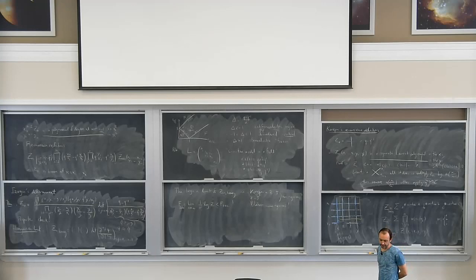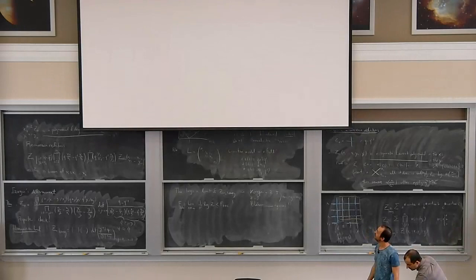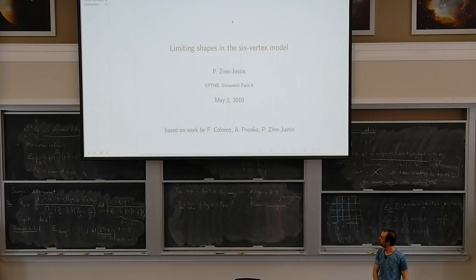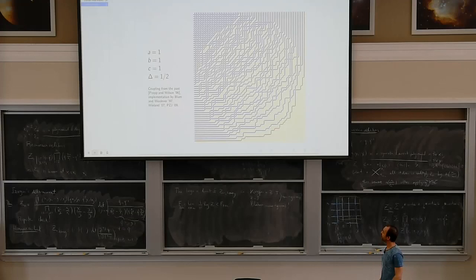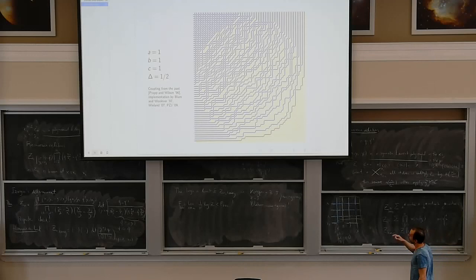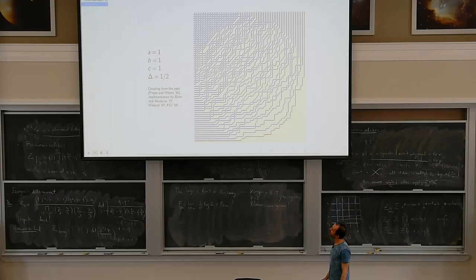This is very similar to behavior that combinatorialists had observed in random tilings and dimer models. I did a lot of numerical work at the time. For example, here is a picture of a uniformly randomly generated configuration of the domain wall boundary condition, produced using coupling from the past. All Boltzmann weights are set equal to one — so it's the uniform distribution on domain wall boundary condition configurations.